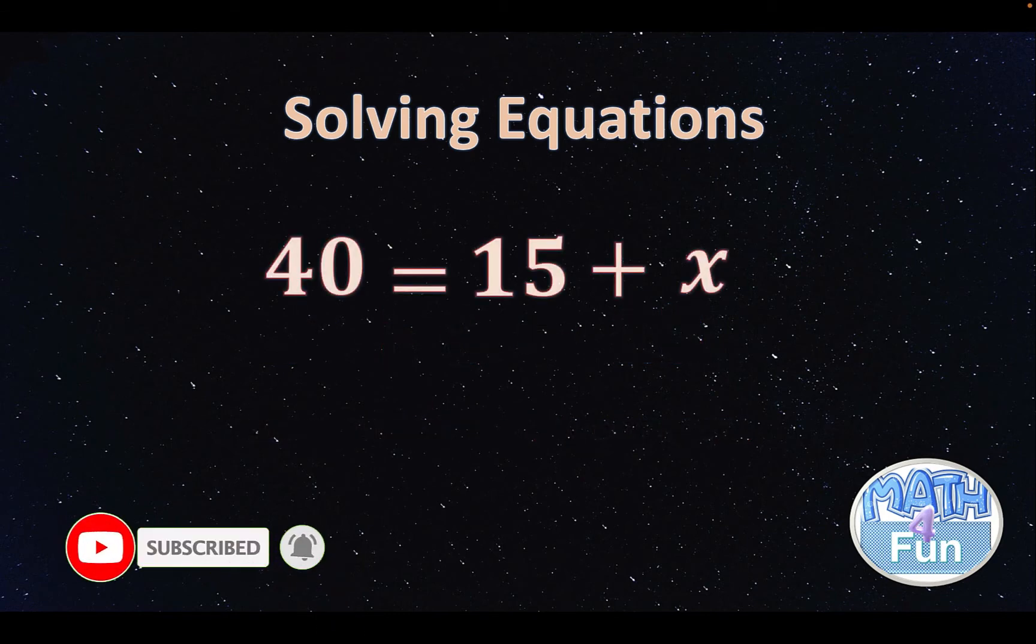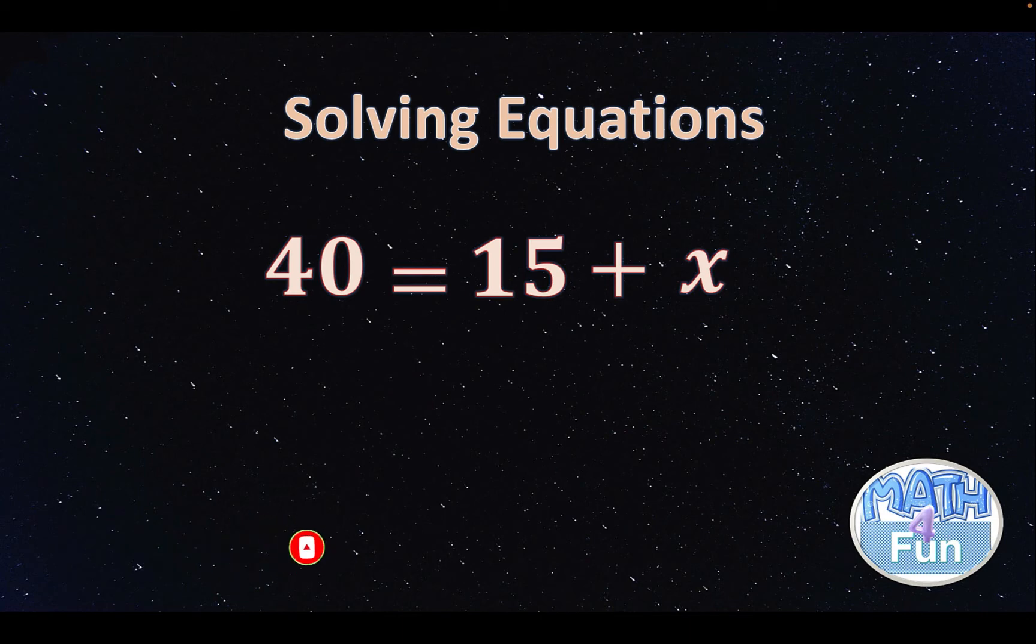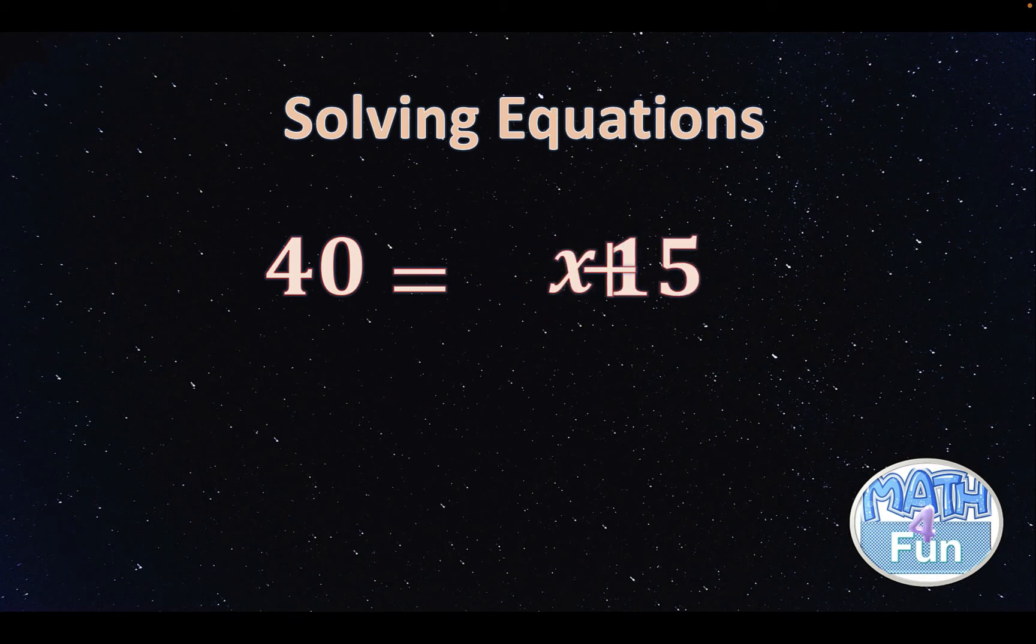Let's check another example. Here we have 40 equals to 15 plus x. How do you find x? We can play a little bit with the variable and the number on the side of the equation. Like 15 plus x, we can write it as x plus 15, but take care of the signs. You know that addition is commutative and we can play with the order, but if you have a negative sign, you have to take care of this and do it properly.